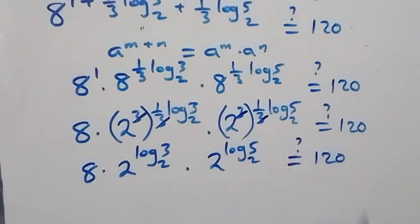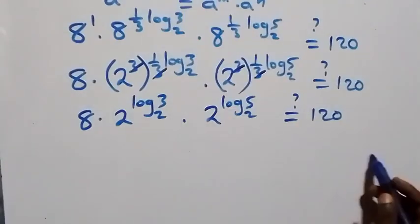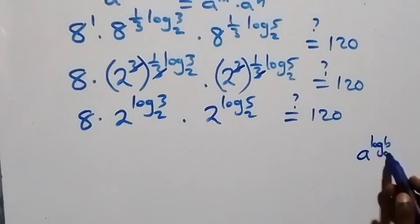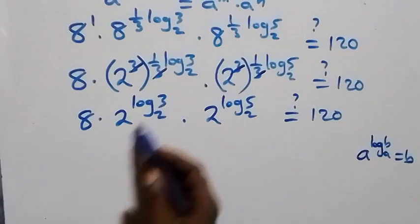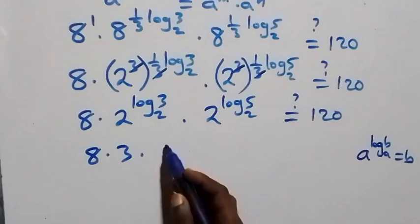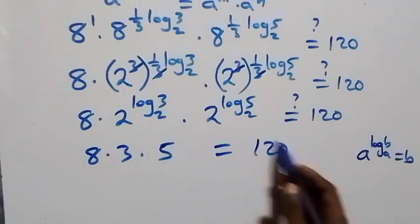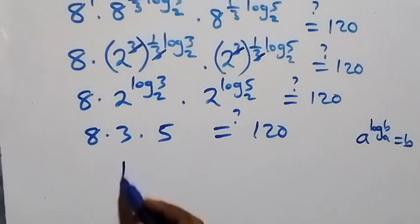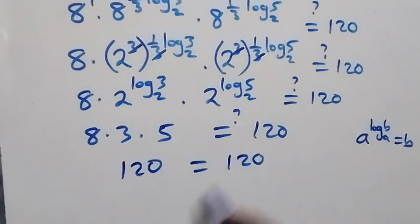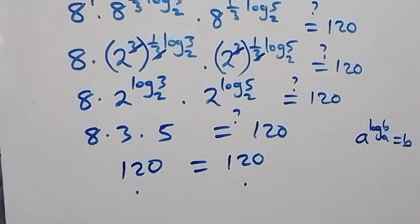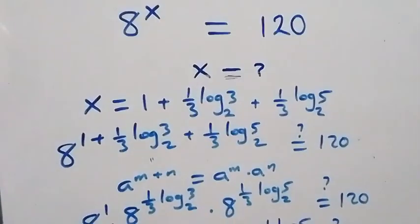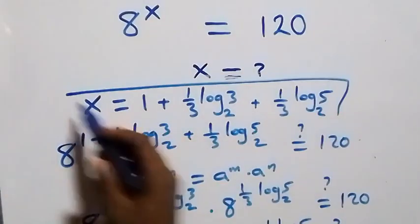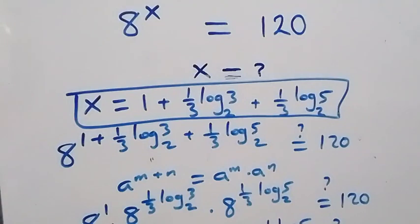This equals 120 on this side. Using the identity a raised to power log_a(b) equals b, we get 8 times 3 times 5, which equals 120. The left-hand side equals the right-hand side, confirming that x equals 1 plus (1/3)·log₂3 plus (1/3)·log₂5 satisfies the given problem. Thank you for watching — don't forget to subscribe, comment, share, and give it a thumbs up. See you next class!